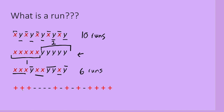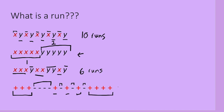And what about in this situation? Counting through: the first RUN, second RUN, third RUN, fourth RUN, fifth RUN, sixth, seventh, eighth, and ninth RUN. So in total there are 9 RUNS for this situation.